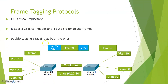What is a frame tagging protocol? There are two types of protocol. One is ISL, which is Cisco proprietary — ISL stands for Inter-Switch Link. It adds a 26-byte header and a 4-byte trailer to the frames. Because the tagging is done at both the header and trailer end, we call this double tagging. The header contains the source VLAN and the trailer contains the CRC for checking frame integrity.